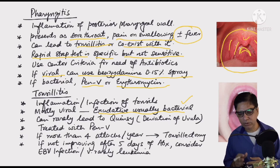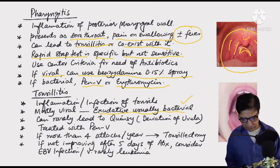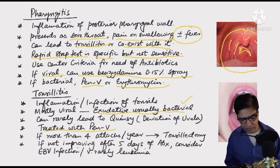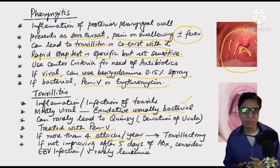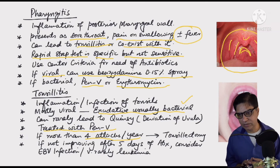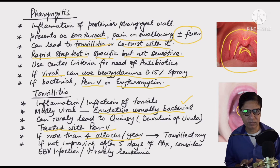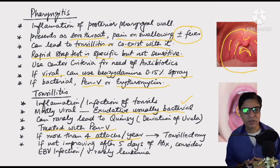Bacterial tonsillitis is treated with phenoxymethylpenicillin. If a child has more than four antibiotic-requiring attacks per year, or if it is affecting quality of life, the child becomes a candidate for elective tonsillectomy. Different trusts have different guidelines, but if life is being significantly affected, tonsillectomy should be considered.